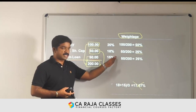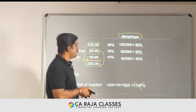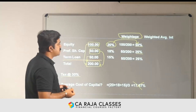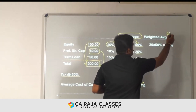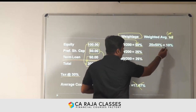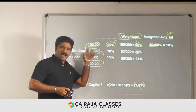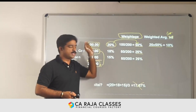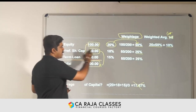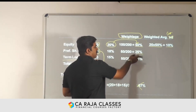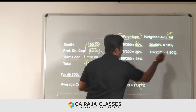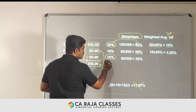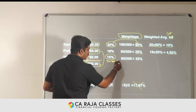These weightages must be multiplied with their respective costs to find the weighted average cost of capital. So 20% multiplied by 50% gives a weighted cost of 10% for equity. For preferential capital, 18% multiplied by 25% gives 4.5%. When it comes to debt, we must remember that the 15% interest gives a tax benefit, so we need to consider only the net cost.